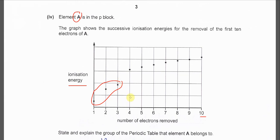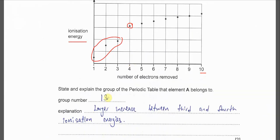And the fourth electron is from the inner shell, so it's going to take more energy. Therefore we know it's group 13 because there is a large or larger increase between the third and the fourth IE, showing that it has three valence electrons.